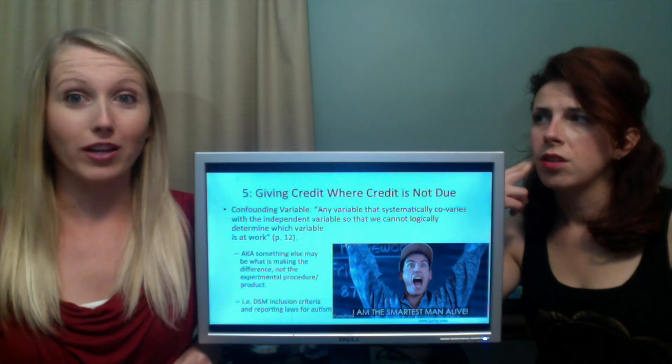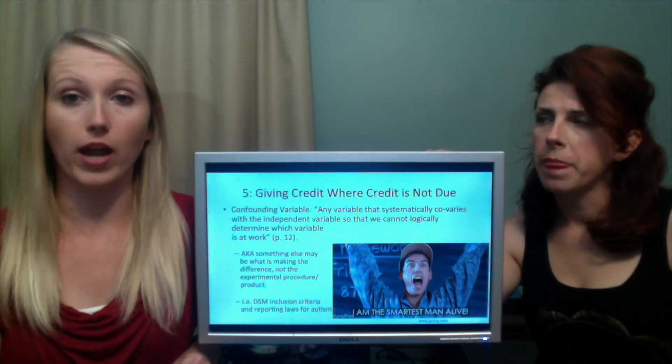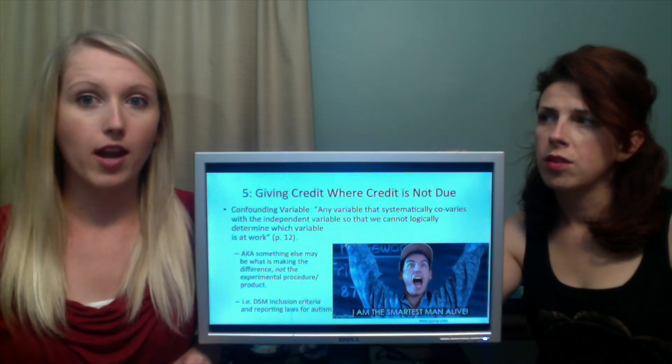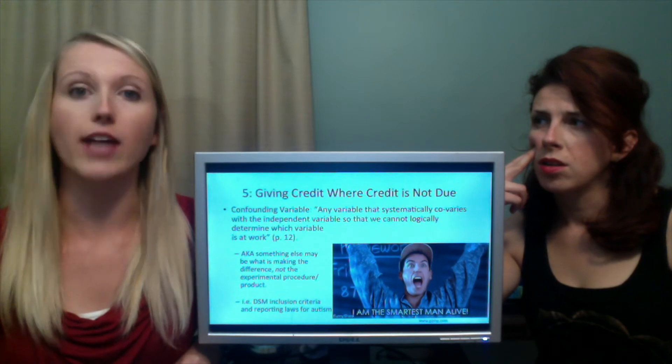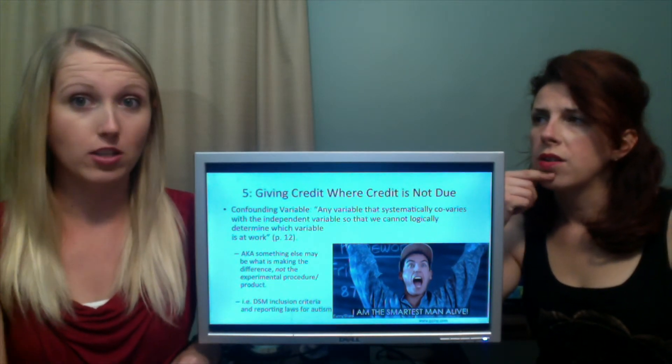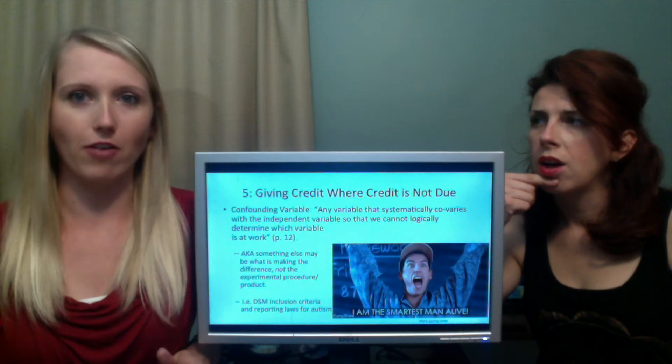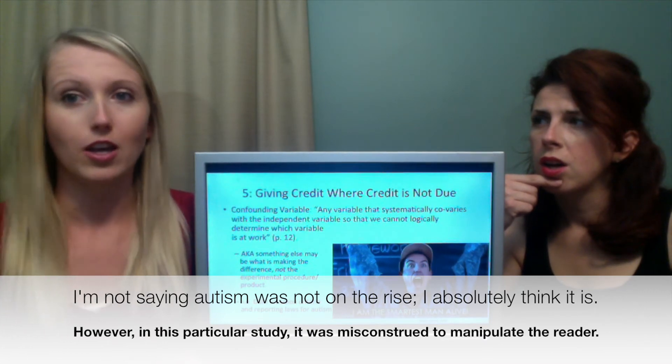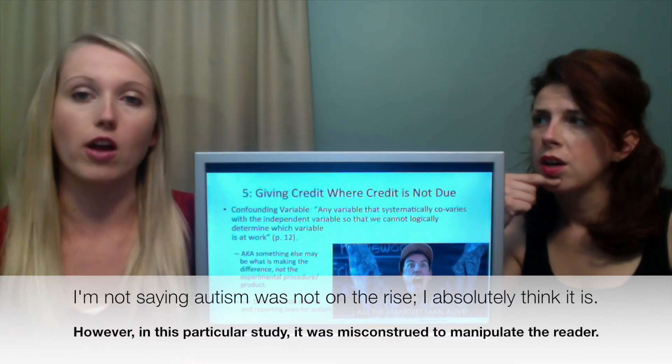Another thing that changed during that time was reporting requirements for that country. In the 90s, the only people who had to report that someone had autism were people who ran institutions that institutionalized these kids with autism. That only made up 7% of all the people with autism. Then, in the 2000s, they changed that to every single doctor has to report if a patient has autism. So we're going from 7% to nearly 100%. Of course you're going to see a skyrocket. But it's not that autism increased. It's that the reporting increased. It's that the inclusion criteria for the diagnosis increased. That's a huge confounding variable that a lot of people don't know about.